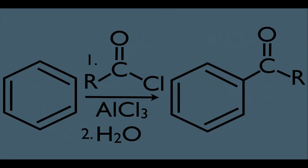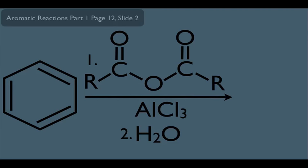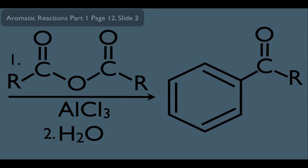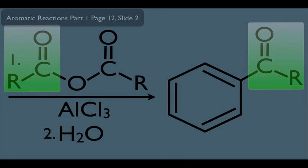There are variations on this reaction. Instead of an acyl chloride, you can use an acid anhydride. Reacting an acid anhydride with a benzene ring gives the same product as using an acyl chloride — the acyl group from the anhydride attaches to the ring. Be aware your Orgo professor might use this alternative reagent.